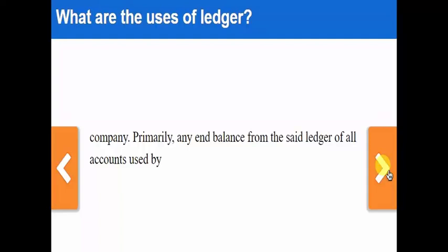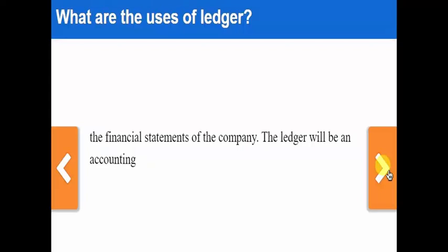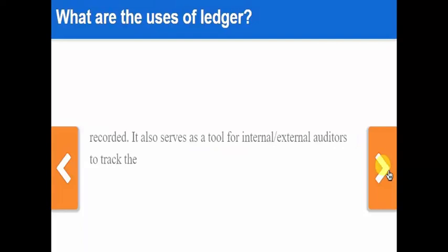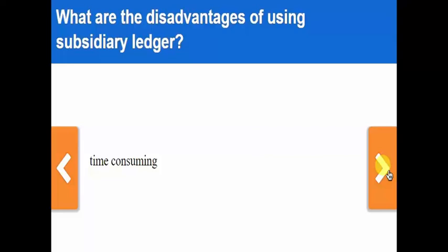Any ending balance from the subsidiary ledger of an account used by a particular business enterprise is the final balance that will be forwarded to a financial statement of the company. The ledger is an accounting tool for determining or tracking from which book of accounts a journal entry was recorded. It also serves as a tool for internal or external auditors to track the flow of business transactions of an entity for a given period.